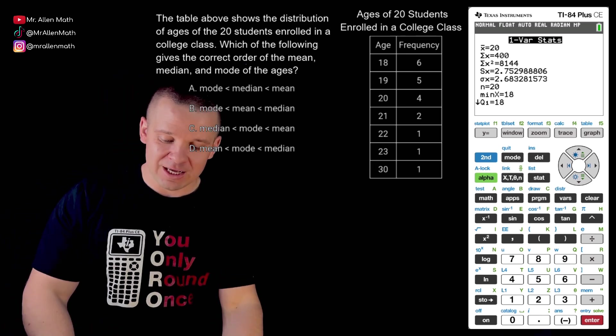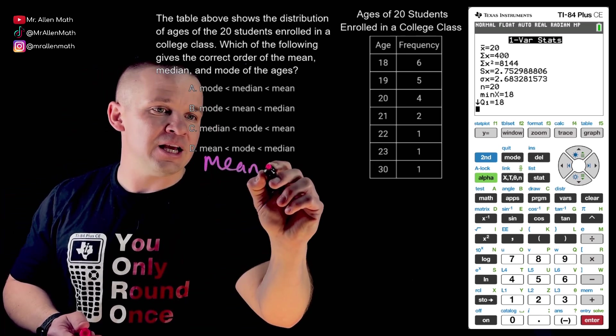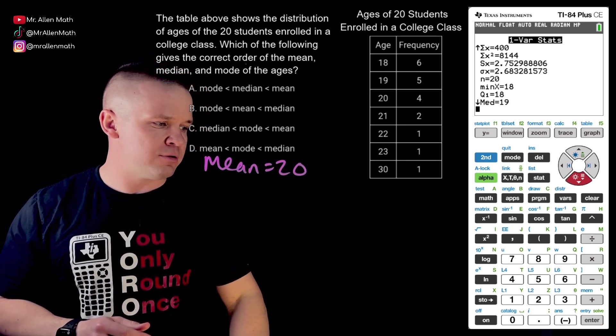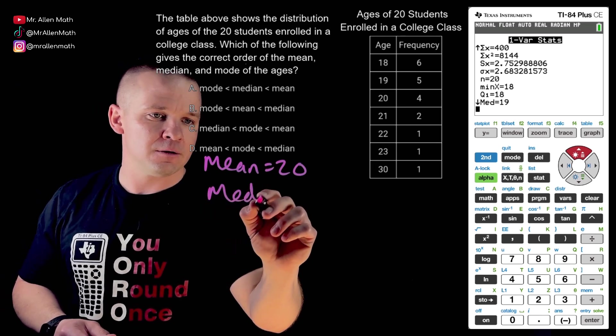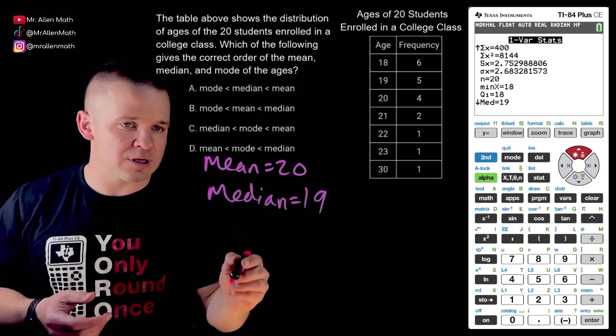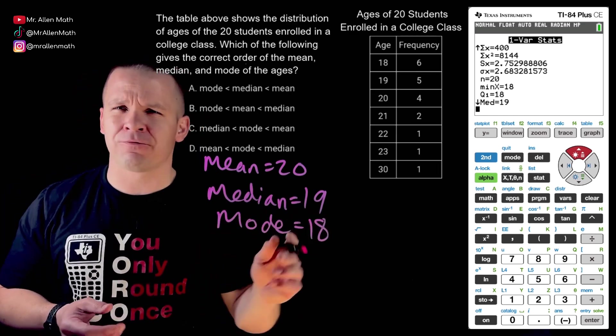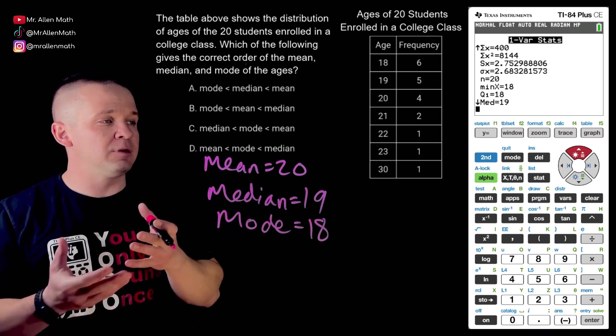We have our mean is 20. X bar is mean. So I'm going to put mean equals 20. Let's see here. Our median, we've got to arrow down a little bit. There we go, it's 19 right there. Median, that's 19. And we said our mode, the most is 18. And that one's easy to see from the table, right? So it's asking us to put them from least to greatest. So it looks like it's mode, then it's median, then it's mean. So the choice is A.